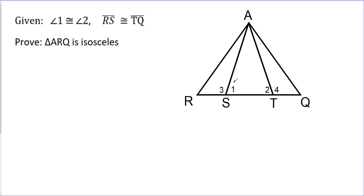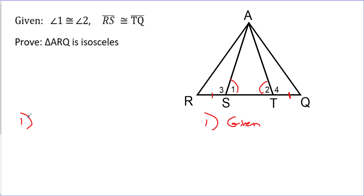I'm going to start off by using a single arc to mark that angle 1 is congruent to angle 2, and then RS is this little segment here - I'm going to say that this piece and TQ, which is over here, are equal. Before I get to writing anything down, we're going to write our givens down. That's going to be our first step. Angle 1 is congruent to angle 2, and RS is congruent to TQ.